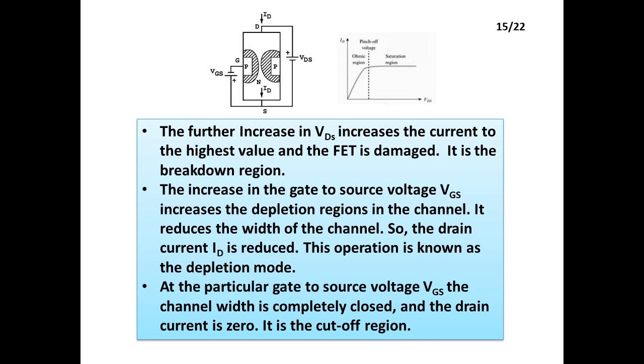The increase in the gate to source voltage VGS increases the depletion regions in the channel. It reduces the width of the channel. So, the drain current ID is reduced. This operation is known as the depletion mode. At the particular gate to source voltage VGS, the channel width is completely closed and the drain current is zero. It is the cutoff region.